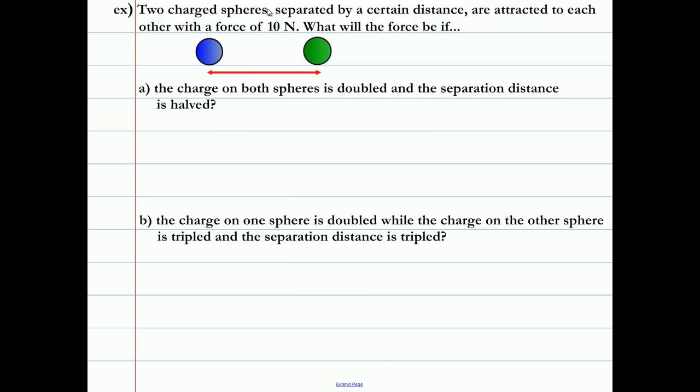Here we've got an example applying Coulomb's Law. We've got two charged spheres separated by a certain distance, attracted to each other with a force of 10 newtons. The question is what is the force? First situation, the charge on both spheres is doubled, the separation distance is halved.